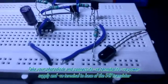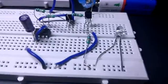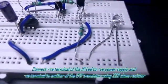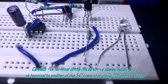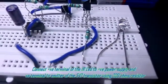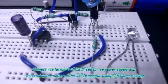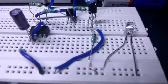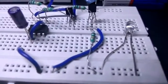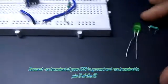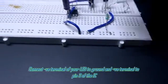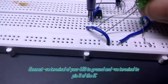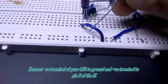Now take your LED and connect its positive terminal to pin 3 of the IC and negative to negative power supply.